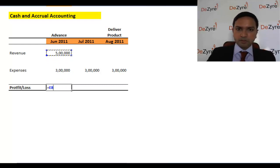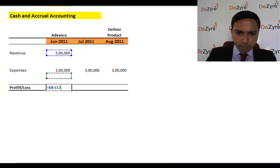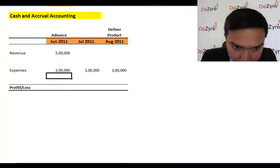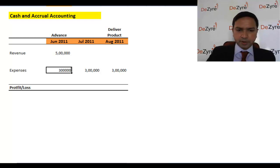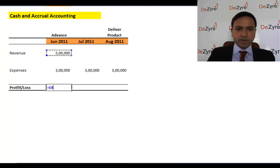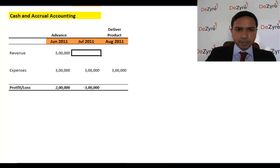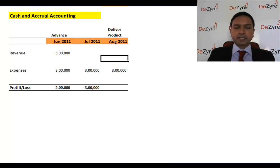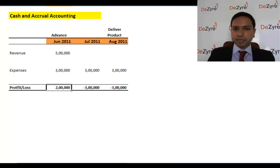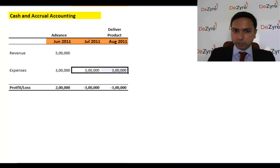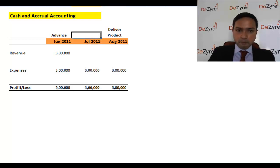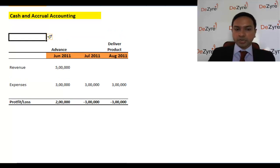Let's say the expense each month is three lakhs. First month: five lakhs came in and you spent three lakhs — that's two lakhs in profit. In July 2011, there's suddenly a loss of three lakhs, and again another loss of three lakhs in August. The reason is obvious: no income is coming in but expenses are going out, which is why you're making a loss.